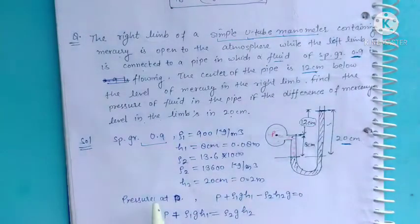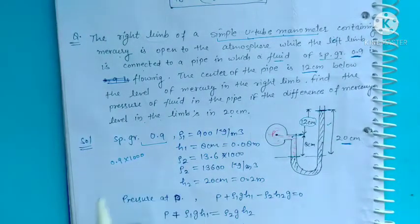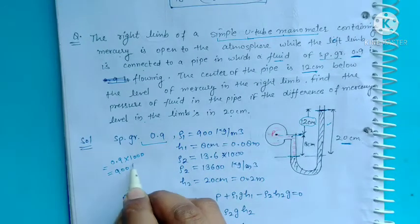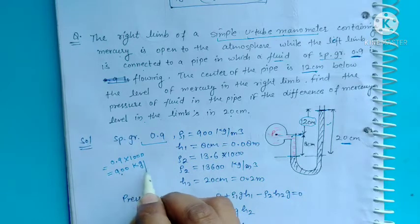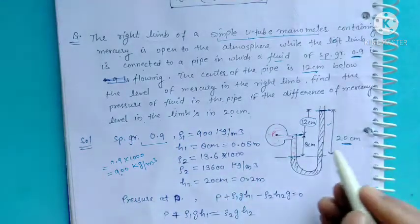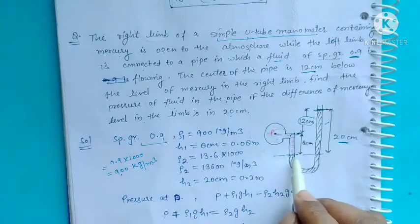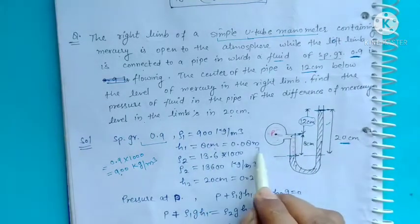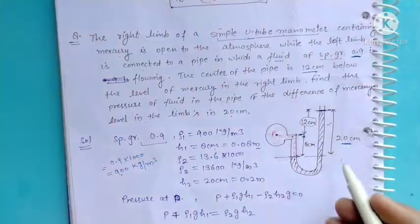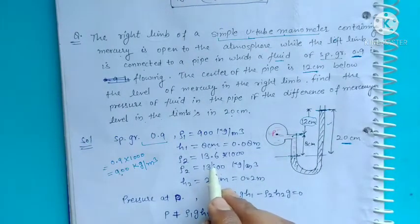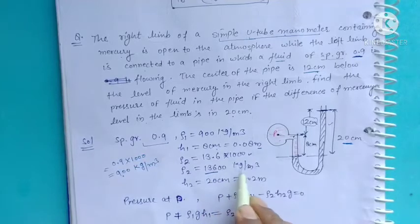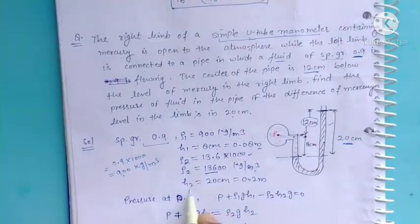Given data देख लेते हैं: specific gravity 0.9 है, तो liquid की density = 0.9 × 1000 = 900 kg/m³। Left limb में liquid की height h₁ = 8 cm = 0.08 m। Right limb में mercury है जिसकी specific gravity 13.6 है, इसलिए mercury की density = 13600 kg/m³।